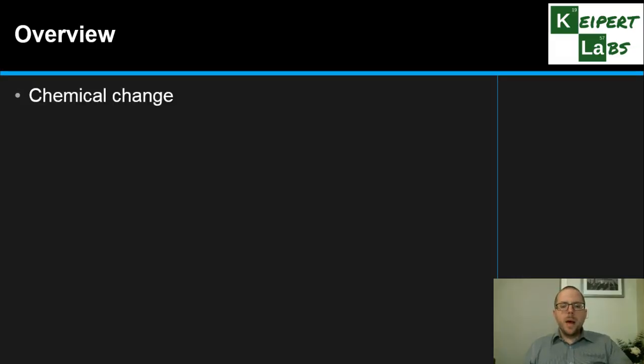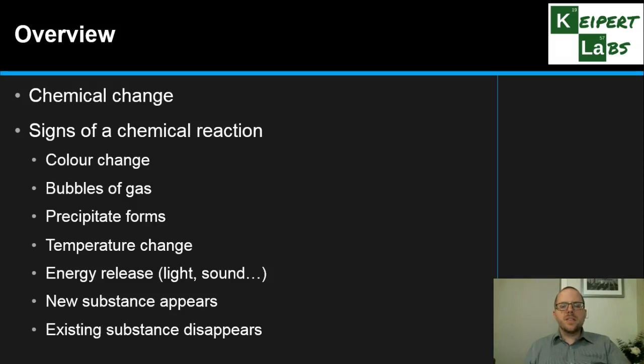As ever we're going to start with an overview. We're going to begin by revising what we mean by chemical change, so that when we start to think about what to look for, we have a sense of what's going on at the particle level. Then we're going to have a look at the series of signs of a chemical reaction that we might look for.